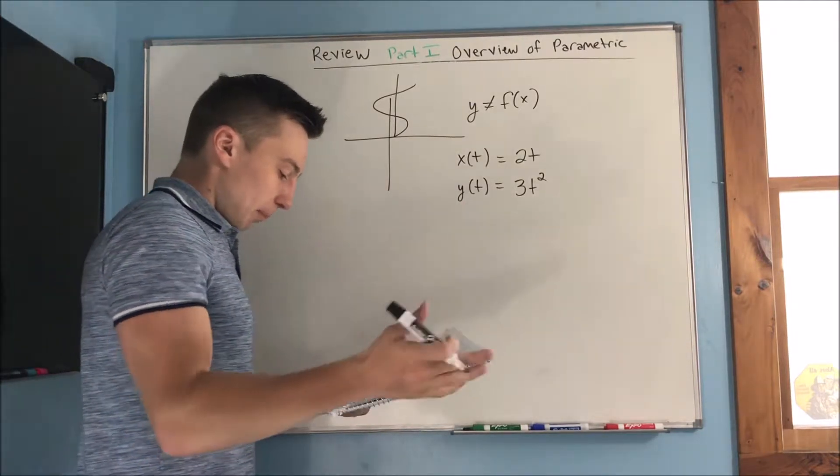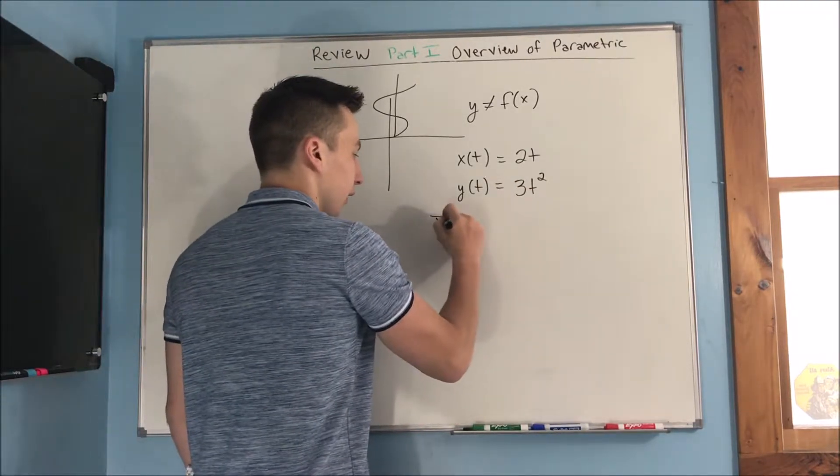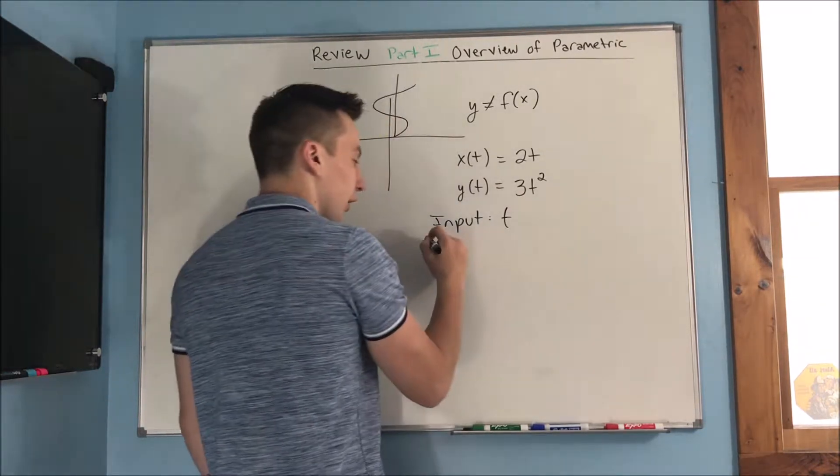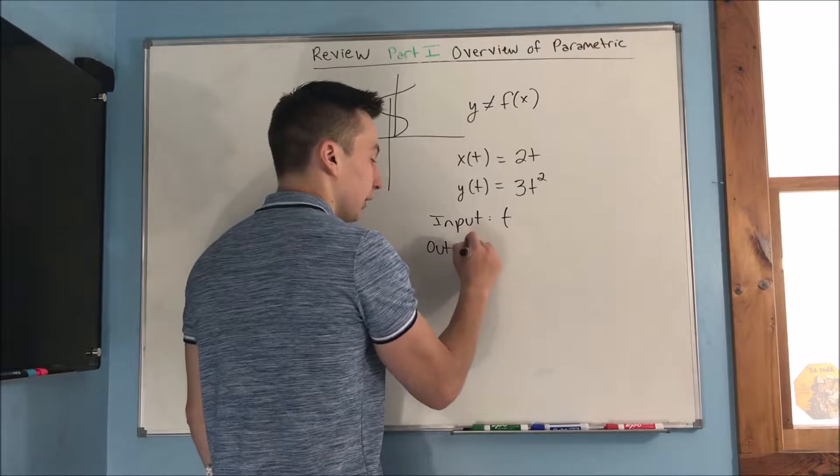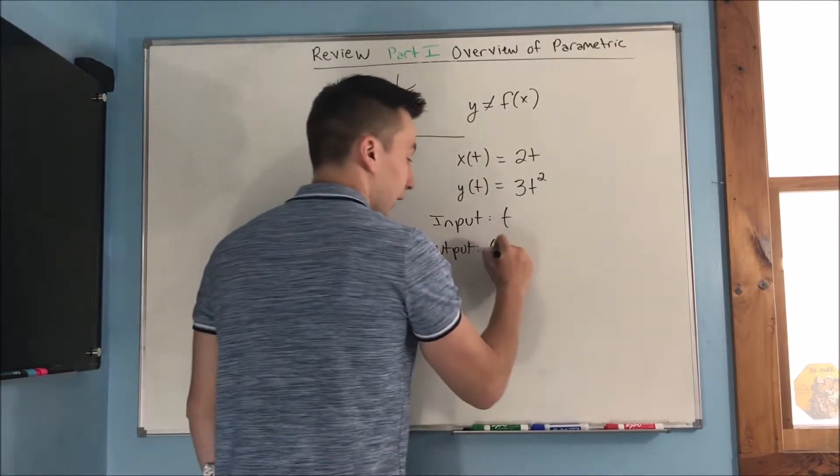Basically what you get here is you have an input of t. You input a t value and you're going to output, because you're going to plug it in this equation, you're outputting an x, y pair.